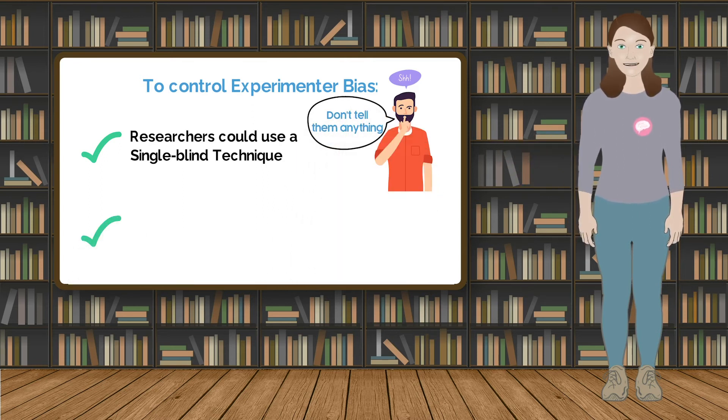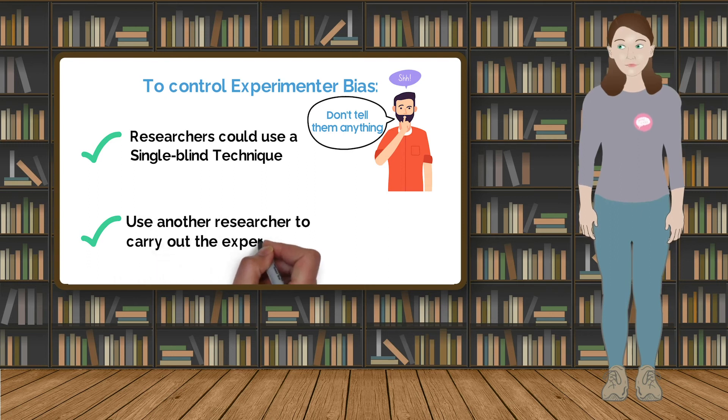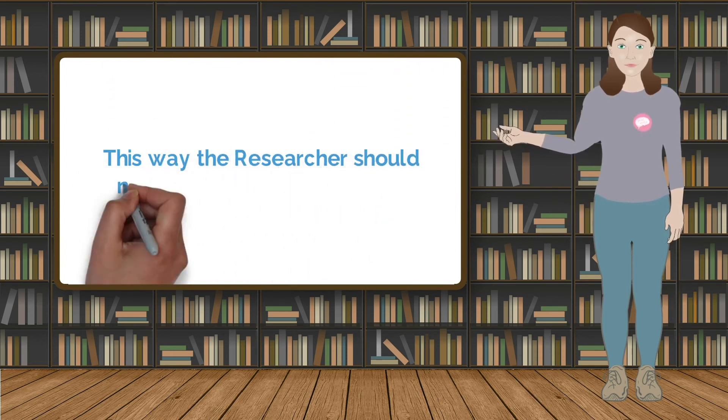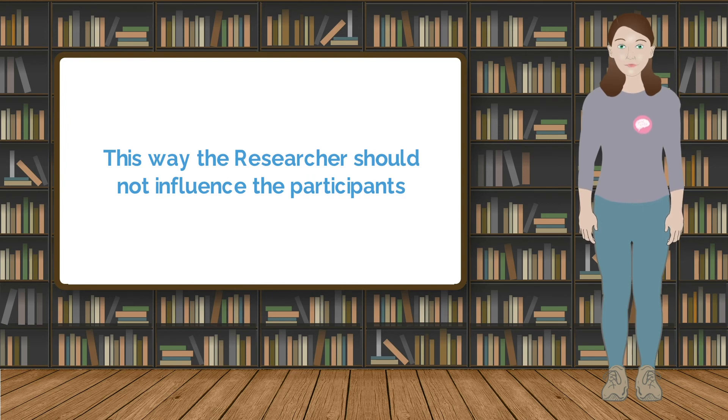Researchers could also employ another researcher who only implements the procedure and does not know which condition the participant is in or even what the aims of the research are. This means that the researcher should not consciously or unconsciously influence the participants.